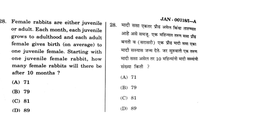Female rabbits are either juvenile or adult. Each month, each juvenile grows to adulthood and each adult female gives birth to one juvenile female. Starting with one juvenile female rabbit, how many female rabbits will there be after 10 months?